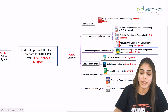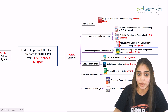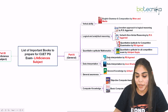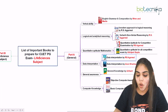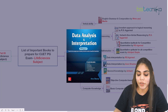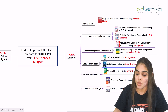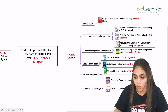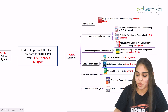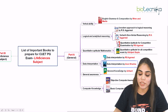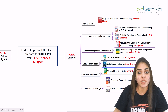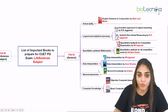The fourth section is data interpretation, where you have to analyze the data given in the question. For this, you can go for Data Interpretation by RS Agarwal — you can see the cover page — or you can refer to Data Interpretation and Analysis by Arun Sharma. Both are good books; you can refer to either one or both to prepare for the CUET PG examination.